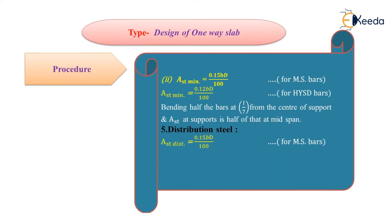The formula to calculate distribution steel is same as AST minimum. AST distribution for mild steel bar equals 0.15% of gross area. While for HYSD bar, AST distribution equals 0.12% of gross area.